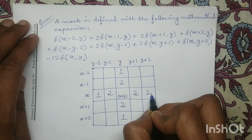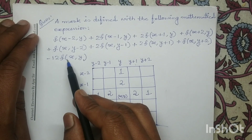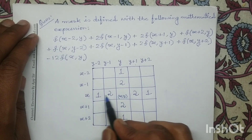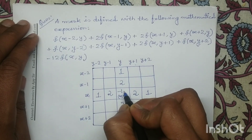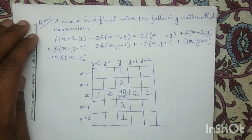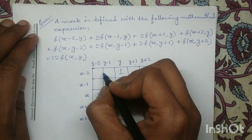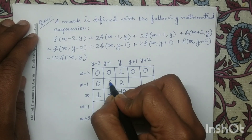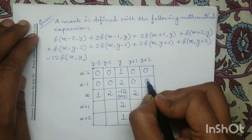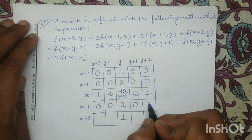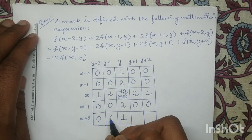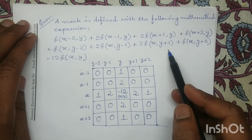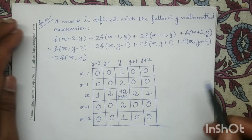Last, f(x, y) — the coefficient is minus 12, so I will write minus 12 here. All remaining pixels will be assigned the coefficient 0. So for this given mathematical expression, we have designed our mask. Thank you.